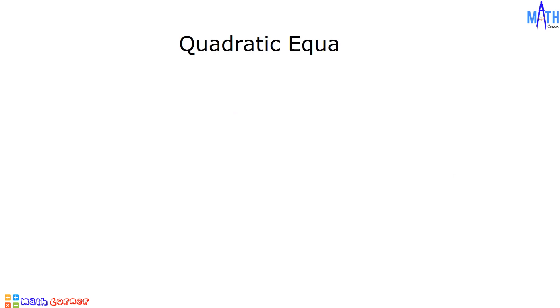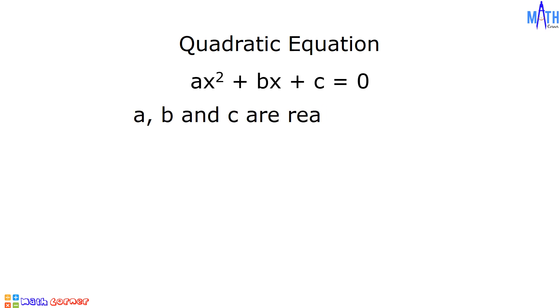A quadratic equation in standard form is ax squared plus bx plus c is equal to 0, where a, b, and c are real numbers, and a is not equal to 0.